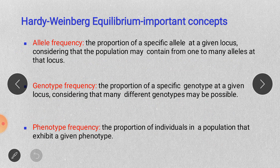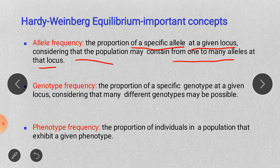The next concept is allele frequency. Allele frequency is nothing but the proportion of a specific allele at a given locus. Any gene consists of two alleles, either in dominant form or recessive form. In a population, how much proportion of a specific allele — either dominant or recessive — at a given locus, considering that the population may contain from one to many alleles at that locus, is called allele frequency.